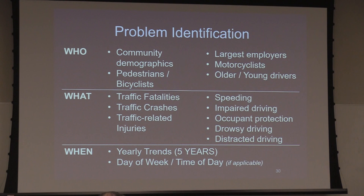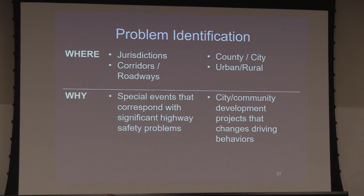The 'what': traffic fatalities, traffic crashes, and traffic-related injuries — those are the three important things. We'll ask about speeding, impaired driving, occupant protection, drowsy driving, and distracted driving. If you're asking for speed equipment, you've got to show us you have a speeding problem — you can't just request radars and LIDARs without having any speeding crashes or fatalities. We're looking for five-year trends. Give us as much information as you can: day of week, time of day. I cannot stress this section of the application enough.